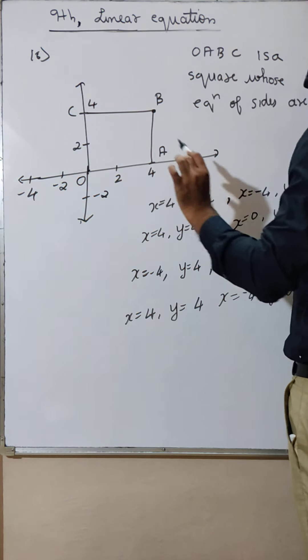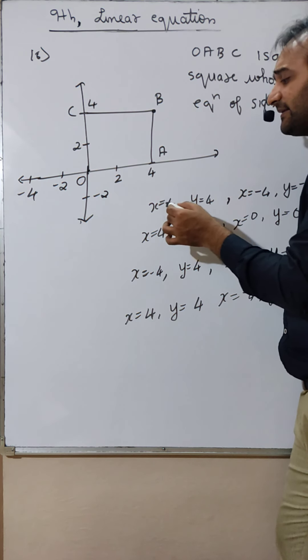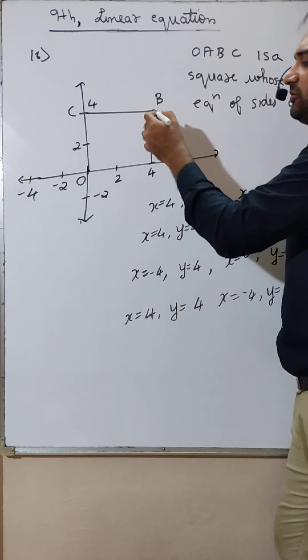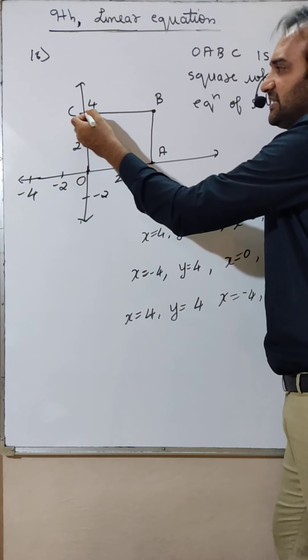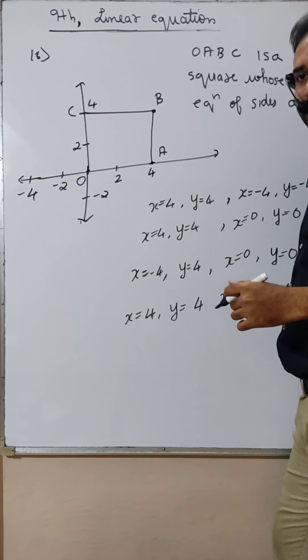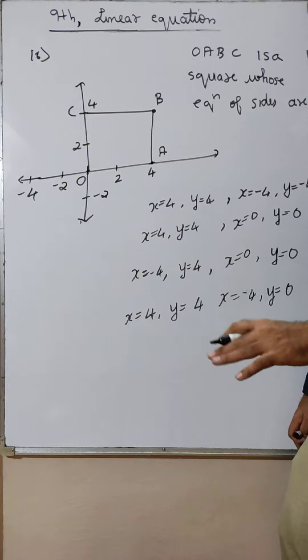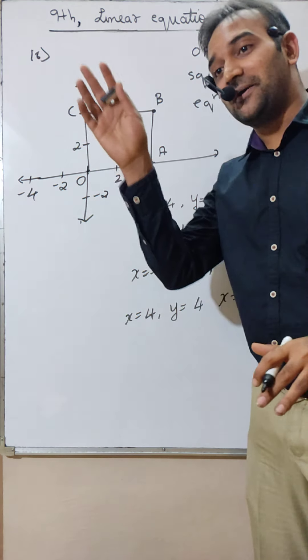See, konsa kidar milan karta hai, utna hi dekhna hai. I repeat. Har x aur y ka point, utar milan karta hai, utna hi check karna hai. See, bhool karke bhi kidar bhi negative mein hai. Sab positive hai. Toh, jitne bhi negative hai, sab khoda. Jitne bhi negative hai, sab khoda.